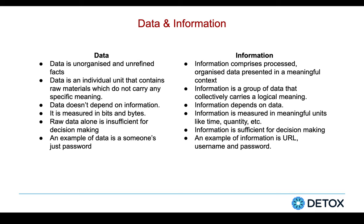We know that every single entity of data would have a certain meaning, but in which context that meaning is referring, we really don't know. Data doesn't depend on information; it is measured in bits and bytes. Raw data alone is insufficient for decision making. Information comprises processed, organized data presented in a meaningful context. Information is a group of data that collectively carries a logical meaning. Information depends on data. Information is measured in meaningful units like time, quantity, etc., and is sufficient for decision making.